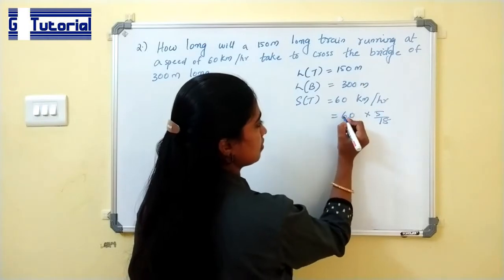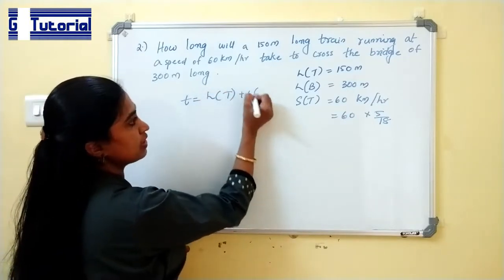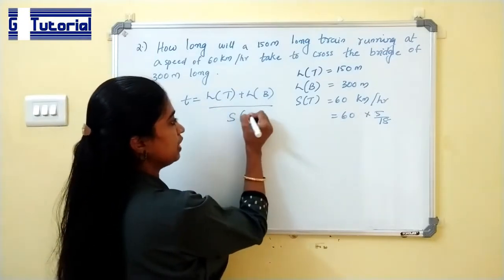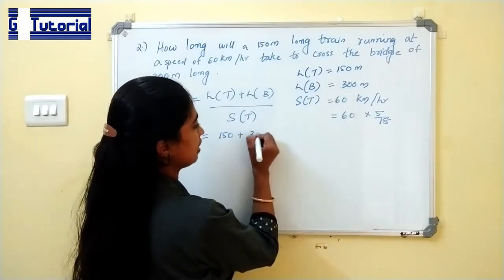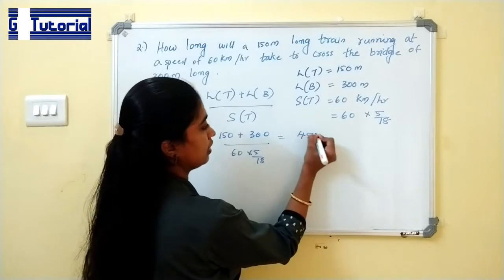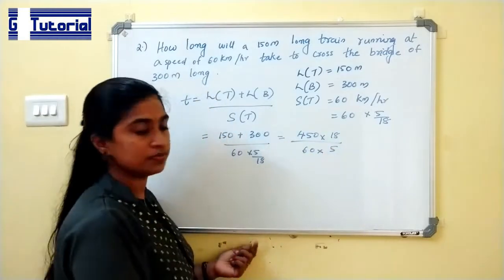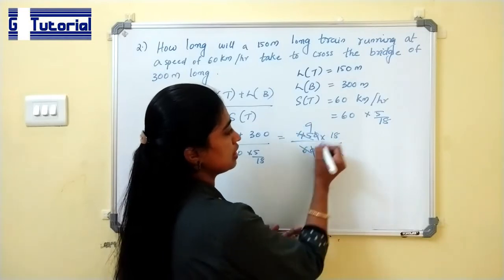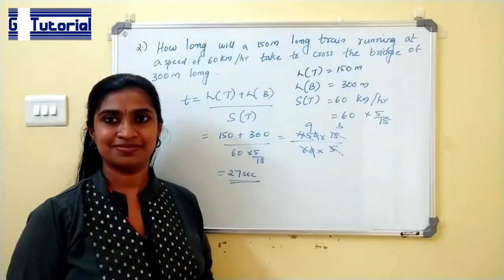Time is equal to distance divided by speed. The total distance is 150 plus 300 which is 450 meters. So time is 450 divided by 60 × 5/18, which simplifies to 450 × 18 divided by 60 × 5. Cancelling, this gives 27 seconds. So the train takes 27 seconds to cross the bridge.